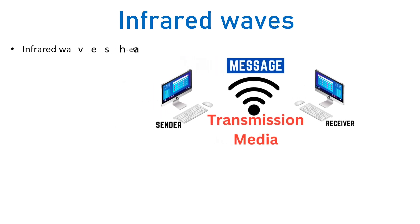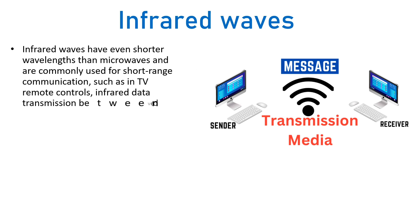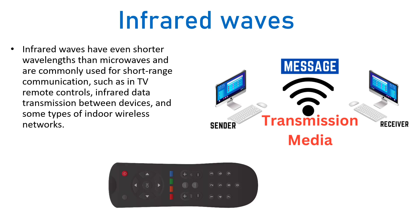Infrared waves have even shorter wavelengths compared to microwaves and radio waves, so they are used for short-range communications such as TV remote controls, infrared data transmission between devices, and some types of indoor wireless networks. Infrared waves are unguided transmission media basically used in short-distance communications, for example TV remote controls.